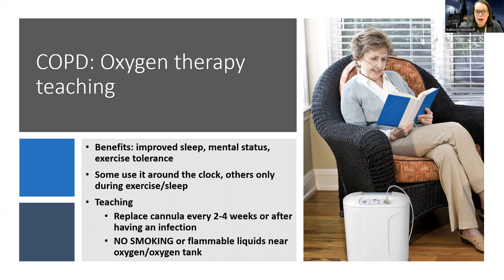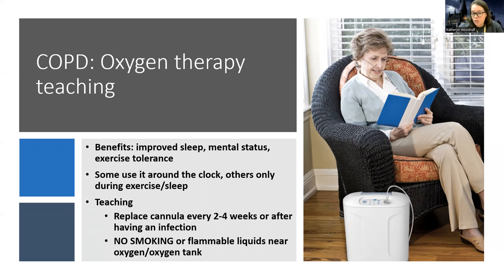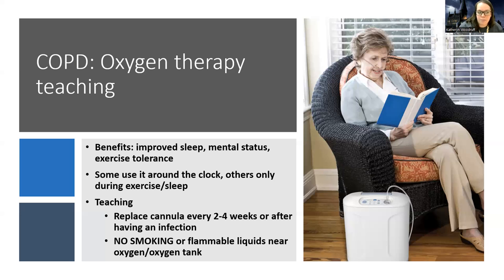These patients are commonly going to be on home oxygen therapy. The benefits include improved sleep, better mental status from adequate brain oxygenation, and improved activity tolerance. Some use oxygen around the clock; others only during sleep or exercise — they should follow physician orders. Nasal cannula should be replaced every two to four weeks or after an infection. Since oxygen is flammable, teach patients to avoid smoking or flammable liquids near the oxygen source, and how to properly store and use the equipment.